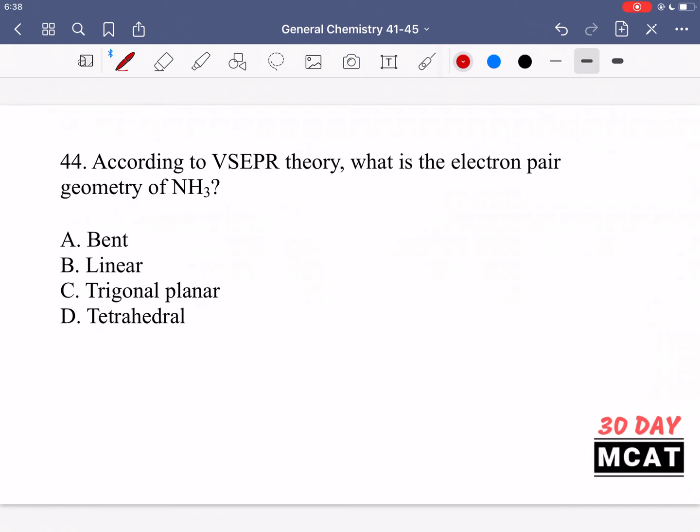In question 44 it says according to VSEPR theory what is the electron pair geometry of NH3 ammonia? So according to this theory we want to know the electron pair geometry. Keep in mind we're talking about the electron pair geometry not the molecular geometry. Electron pair geometry is dependent on how many things something is bonded to. So nitrogen how many electron pairs does it have around it and that counts both bonding pairs and non-bonding pairs.